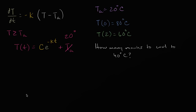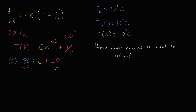The most obvious step is to use T(0). When t equals zero, the exponent is zero, so e to the zero power is one. Therefore T(0) = C + 20. We know T(0) = 80, so we have 80 = C + 20. Subtracting 20 from both sides gives C = 60.